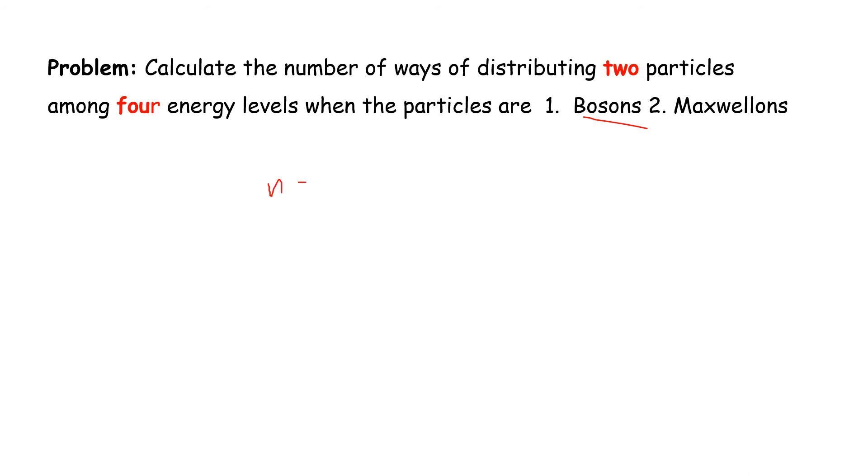First, for bosons, the formula is n plus g minus 1 factorial divided by g minus 1 factorial into n factorial. Here n equals 2 particles and g equals 4 energy levels. Substituting: 2 plus 4 minus 1 factorial divided by 4 minus 1 factorial into 2 factorial. This gives us 10 as the number of ways for bosons.